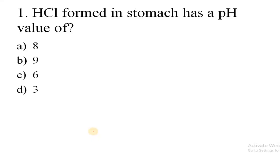The first question is: HCl formed in stomach has a pH value of? This means hydrochloric acid which is formed in our stomach, what is its pH value? And the correct answer is C, that is 6.